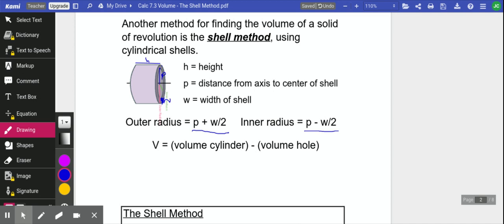The volume of the cylinder is πR²H. So we have π, radius is P plus W over 2 squared, and then H is just the height. And then the volume of the hole is going to be π, and that's the inner radius, P minus W over 2 squared H.